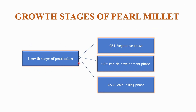The growth stages of pearl millet can be discussed in detail. The first stage is the vegetative phase, which is a very important phase. The second is the panicle developmental stage, and the third stage is the grain filling phase. These are the important growth stages of any crop, especially pearl millet.